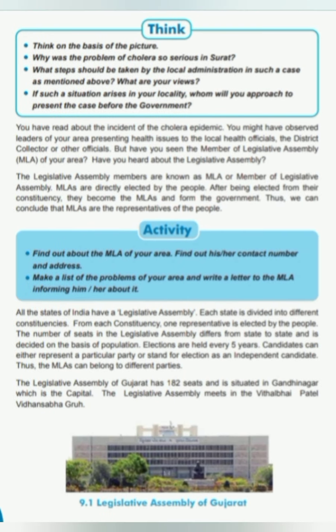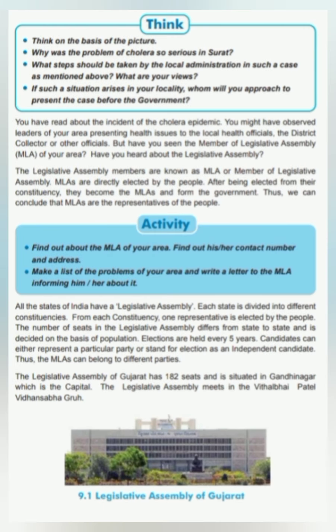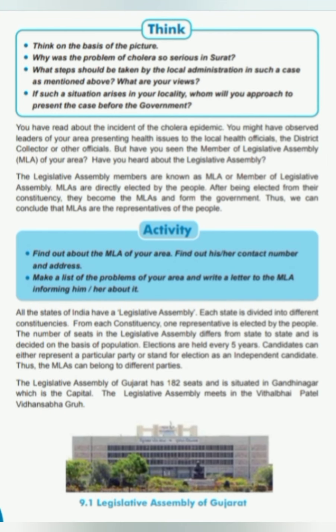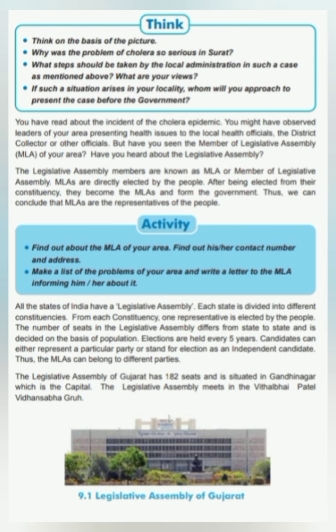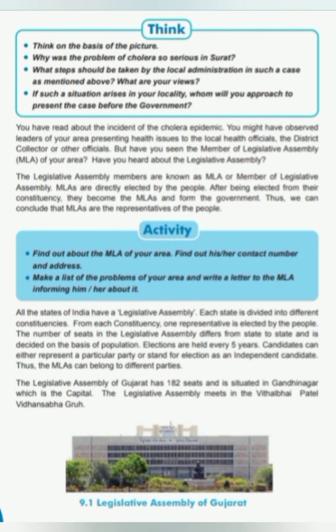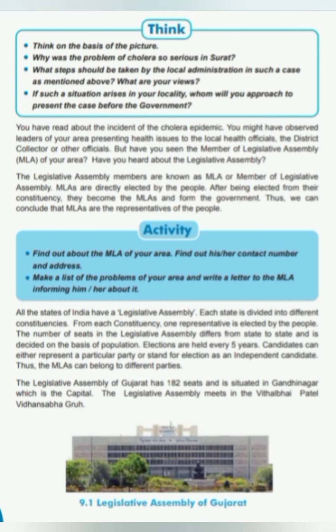But have you seen the Member of Legislative Assembly — the MLA of your area? Have you heard about the Legislative Assembly? The Legislative Assembly members are known as MLA, or Member of Legislative Assembly. MLAs are directly elected by the people. After being elected from their constituency, they become MLAs and form the government. Thus, we can conclude that MLAs are the representatives of the people. People elect an MLA by direct election. A person becomes an MLA after getting elected by people in his constituency and sits in the Legislative Assembly.